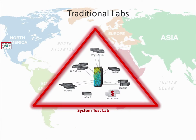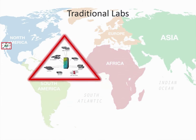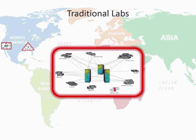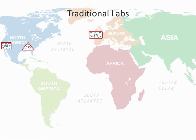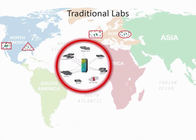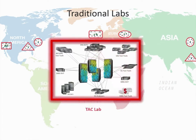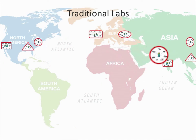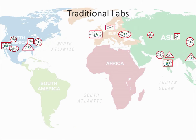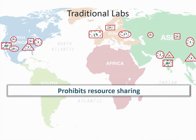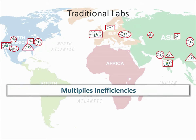Here we have a system test lab. This lab has similar characteristics as the proof-of-concept lab, but it is dedicated to a different purpose and is being used and maintained by a different organization. This QA lab looks similar to the first two labs we just saw, but once again, it's being used and maintained by a different organization. Over time, organizations evolve and test labs can become scattered, both organizationally and geographically. Other factors that can influence test lab location include mergers and acquisitions, changes in hiring practices, and evolving product lines. Eventually, most companies end up with many single-use labs spread over multiple locations. This scenario prohibits efficient resource sharing even within a single organization, and it multiplies the inefficiencies that exist within each lab.